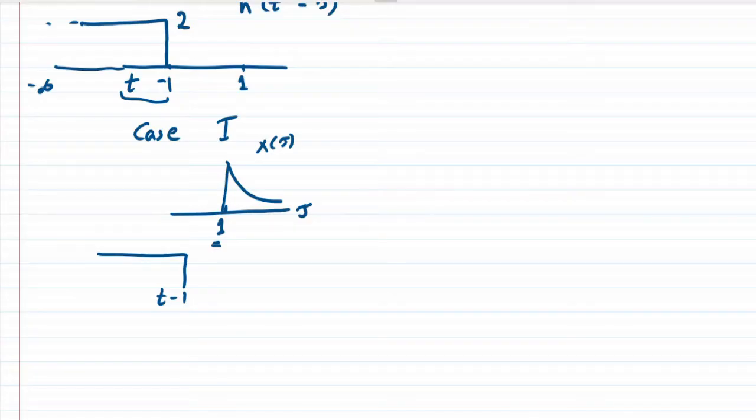In case 1, we are saying that this terminal value is less than 1. In this case there would be no overlap between these two signals.